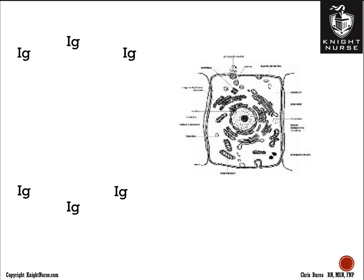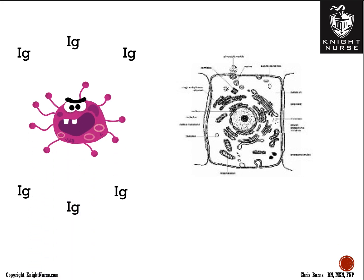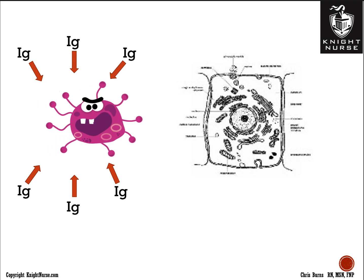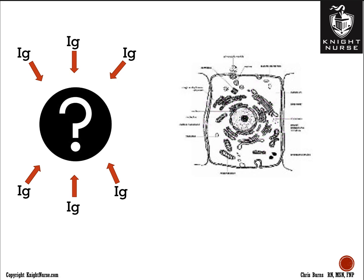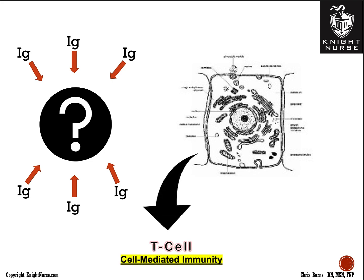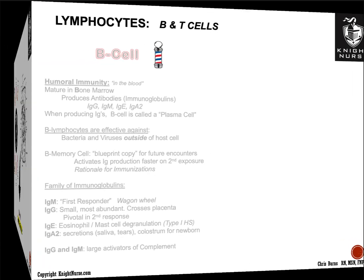With IgG circulating in the blood, when a foreign invader appears, IgG grabs onto it, forms an antigen-antibody complex, activates complement, and eliminates it through phagocytosis. However, sometimes the foreign invader gets inside the cell, and once it does, humoral immunity can't find it anymore. This is why humoral immunity cannot be the only form of specific immunity — which is why we have T cell cell-mediated immunity.